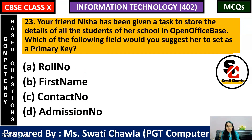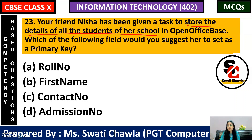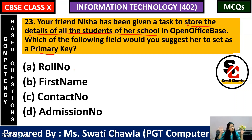Next: Nisha's friend has been given a task to store the details of all the students of her school. If we are storing data for the entire school, we cannot use roll number as a primary key since roll numbers may repeat across classes. So the correct answer would be admission number, as every student's admission number is different.